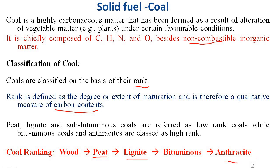As you can see, from the lowest quality — peat — to the highest quality — anthracite — the percentage of carbon drastically increases, from about 60% in peat to 98% in anthracite. As the percentage of carbon increases, the hardness and quality of coal also increases. Peat is the lowest quality and anthracite is the highest quality. This is the classification of coal.